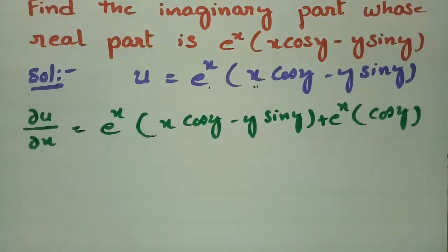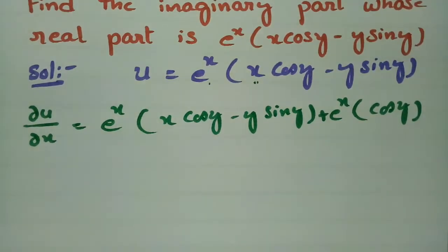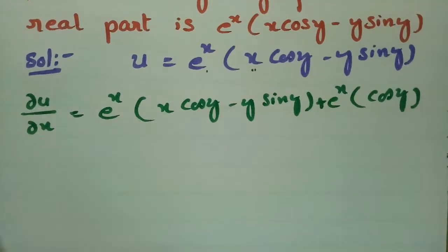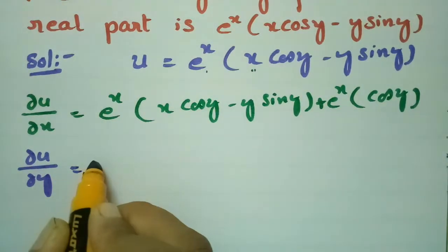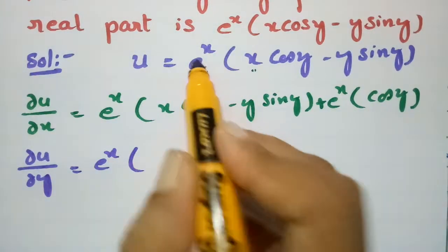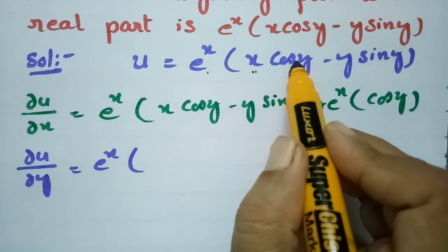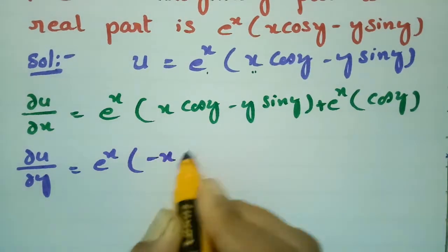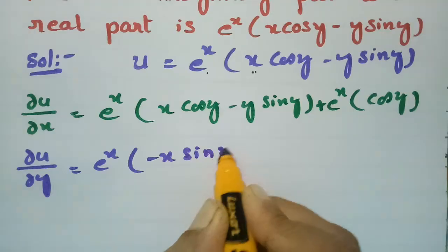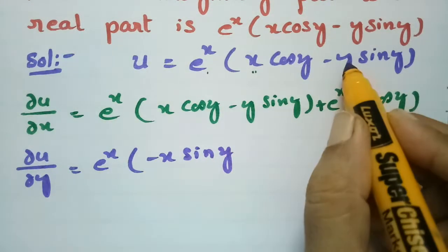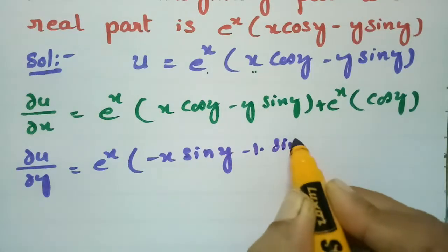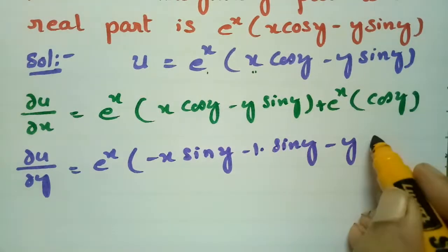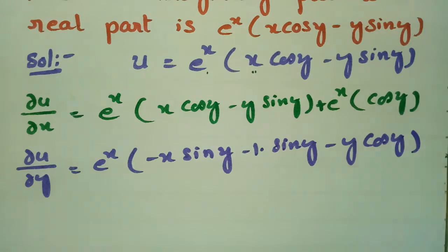Now I have to make a derivative with respect to y. So ∂u/∂y: here e^x is written; for cos y the derivative is minus sin y, giving minus x sin y. Using the uv rule for y, that is 1 into sin y, and for sin y the derivative is cos y.